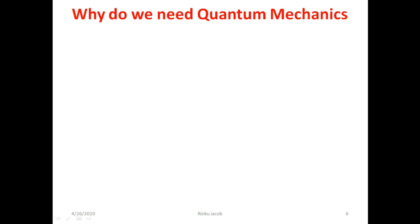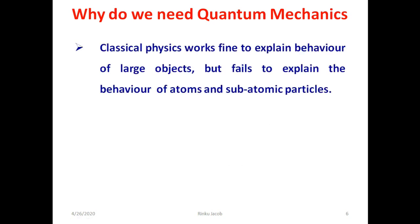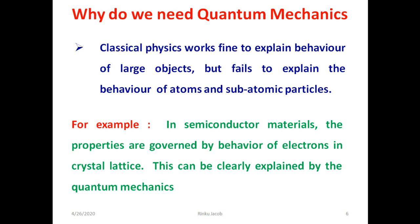First we see why we need quantum mechanics. The classical physics works fine to explain the behavior of large objects, but it fails to explain the behavior of atoms and subatomic particles. For example, if you take a semiconductor material, its properties are governed by the behavior of electrons in a crystal lattice, and this can be clearly explained using quantum mechanics. For everyday objects much larger and much more massive than atoms, and much slower than the speed of light, classical physics works fine.